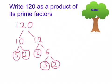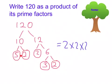Now we have all our prime numbers circled. To write 120 as a product of these prime factors, we write two times two times two times two — because we have a two here, a two here, a two here, and a two here — then times by three, because we have a three here, and finally times by five, because we have the five here.